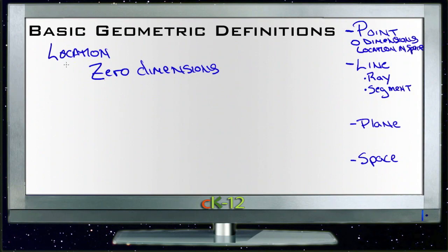If you take an infinite number of points and you line them all up in a row, like so, now instead of just a single location, you have an infinite number of locations that all have something in common. In this case, they all work together to form what we call a line.